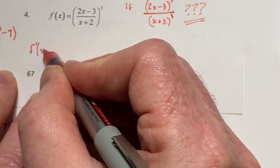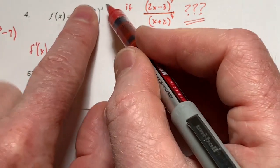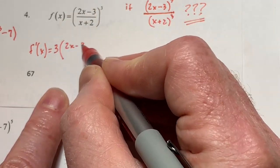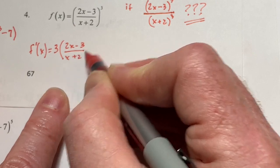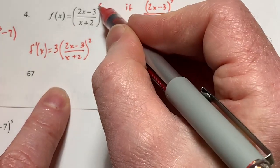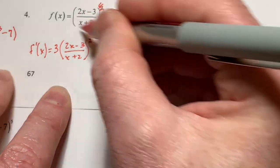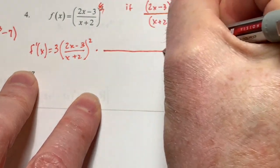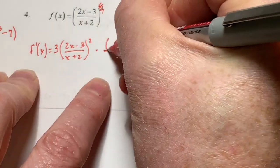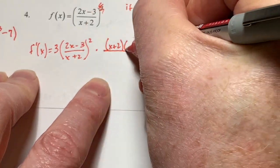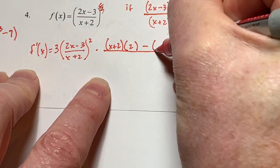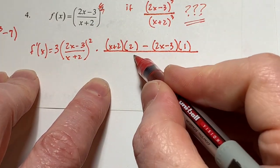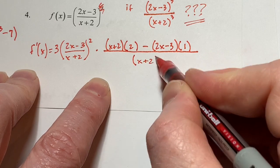The derivative of f of x: first I'm dealing with the power. So three, blah squared — decrease by one gives the blah squared form. That takes care of the outer cube. Then you go to the inside part. What do you see on the inside? A big quotient. So I put a big quotient rule: low d-high minus high d-low over the low squared.